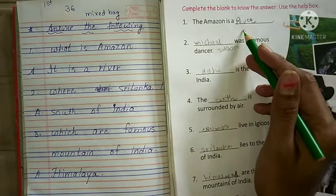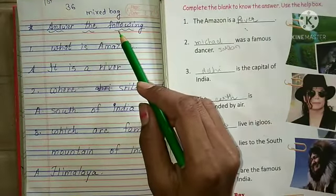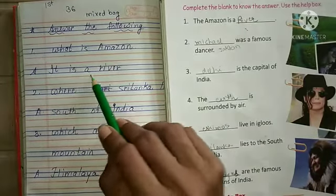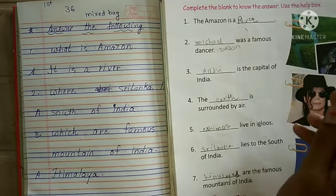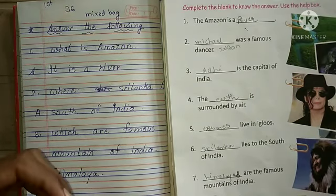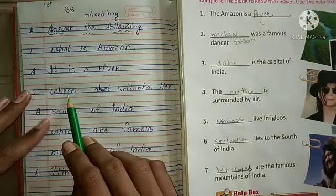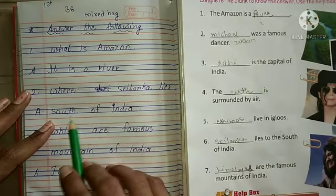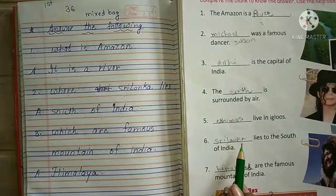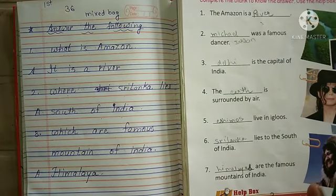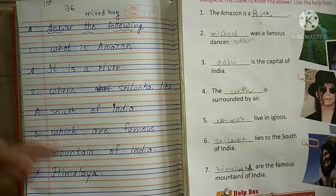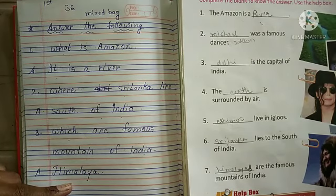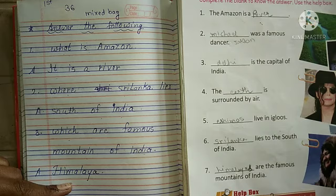Here we have filling the blanks and we will answer the following questions. What is Amazon? It is a river — Amazon is a river. Is Amazon the longest river? Yes. Where does Sri Lanka lie? South of India. What is the famous mountain of India? The answer is Himalaya. Himalaya is the famous mountain of India.